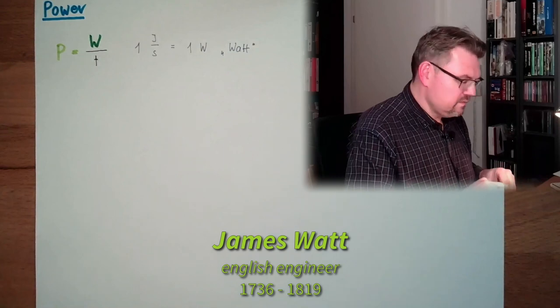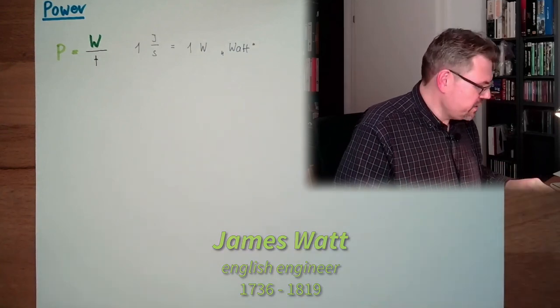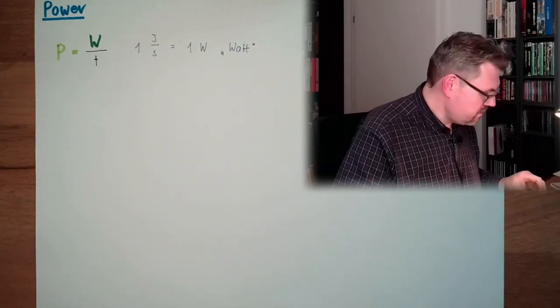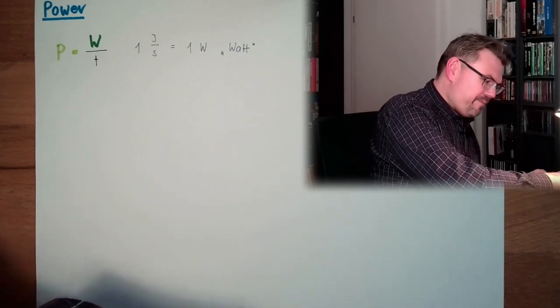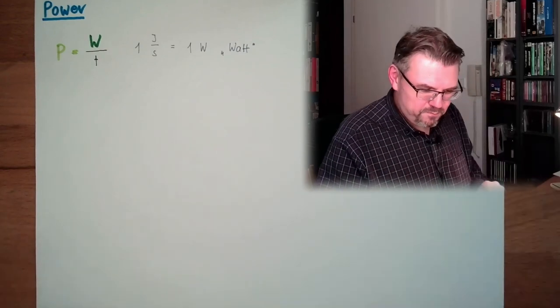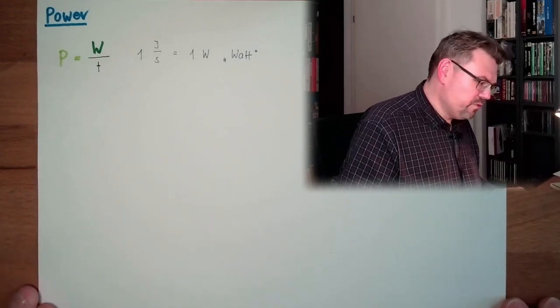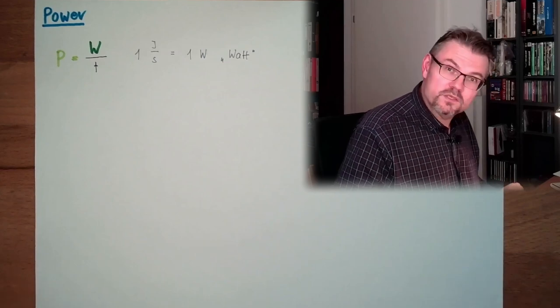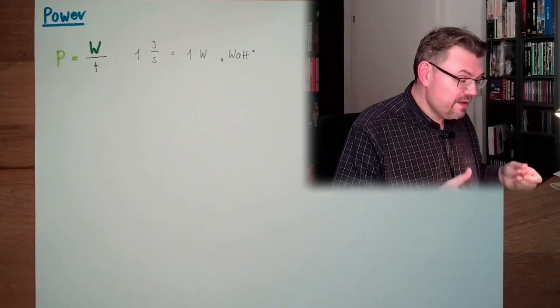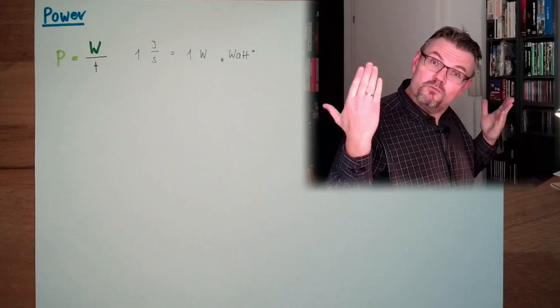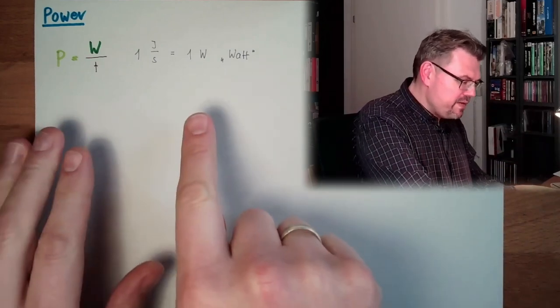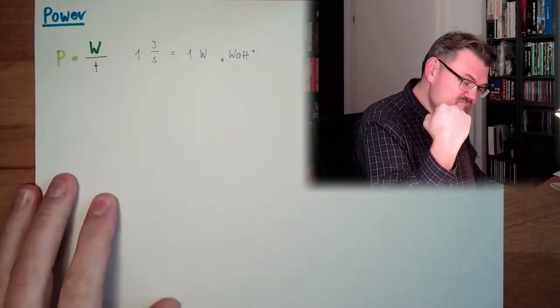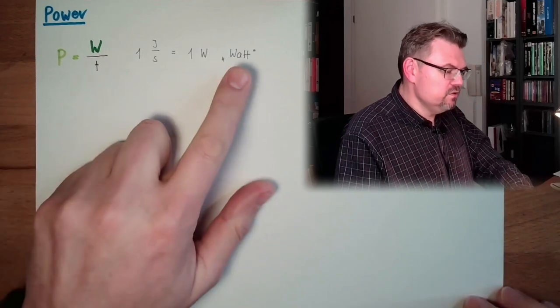James Watt, engineer, who really contributed a lot in the automation process with the steam engines and so on. Power. He produced power. And this is why P is the form of the sign, power, and the unit is watt.